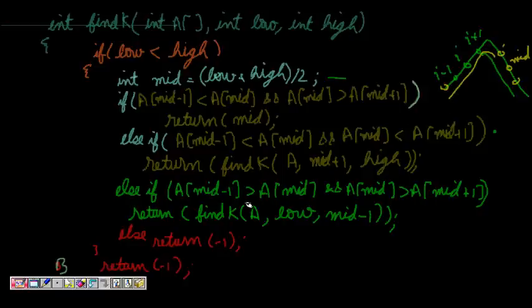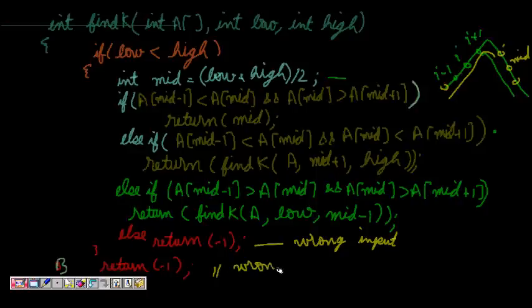And if that is also not the case, it means that the array itself is not monotonic. So this case is if you give a wrong input. And otherwise the flow is not less than high, so the array has been searched completely and it doesn't find any such element. So this is also a wrong condition.